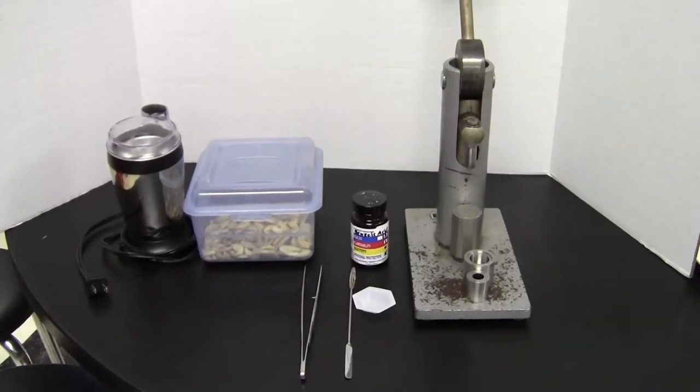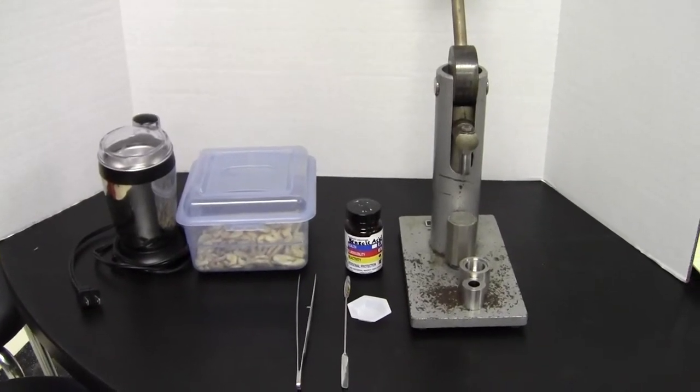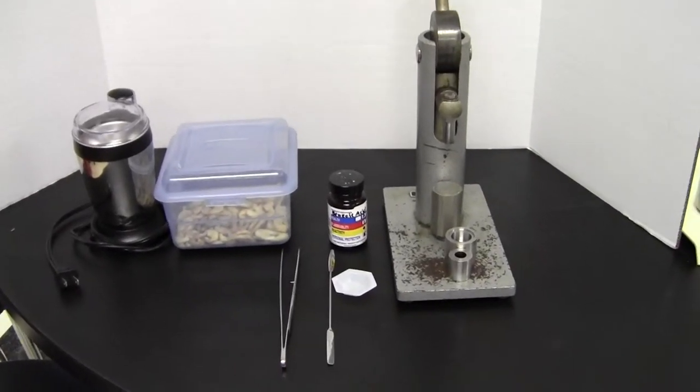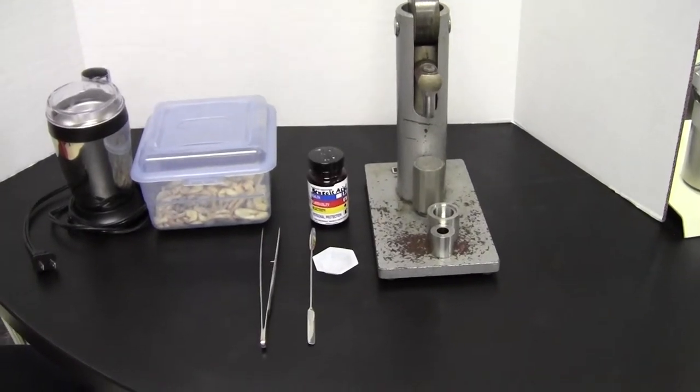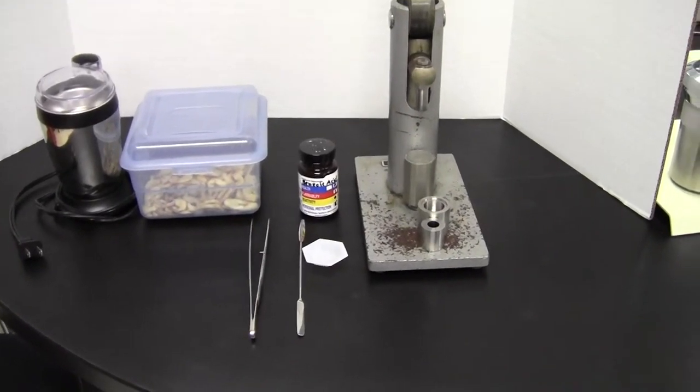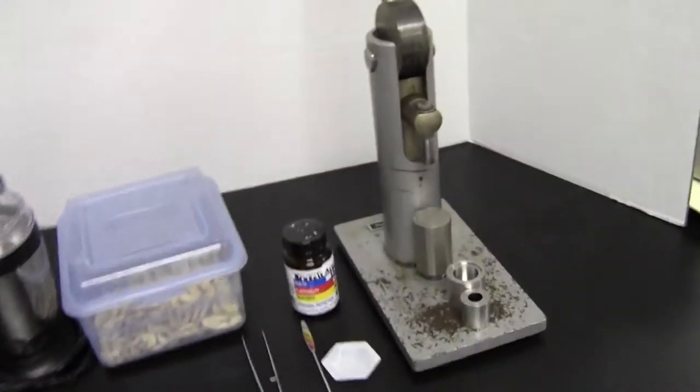All right, we're looking at the setup for the Bohn calorimeter lab, just the part where we make the sample. You'll begin with your standardized run and you'll be making a sample of benzoic acid that's in the jar, and then we'll be using this press to actually make it into a pellet.